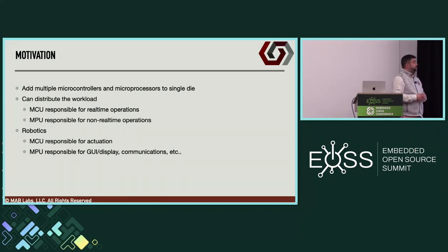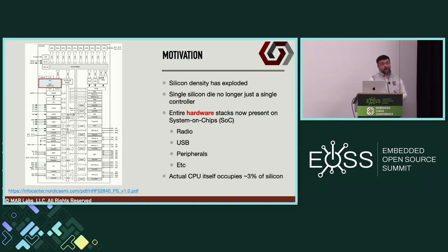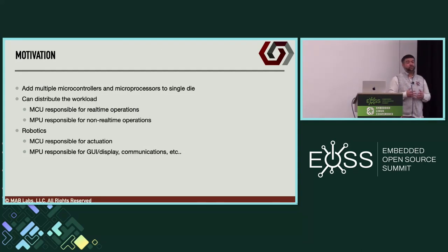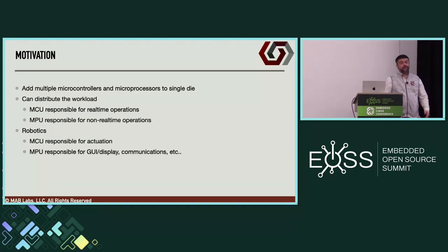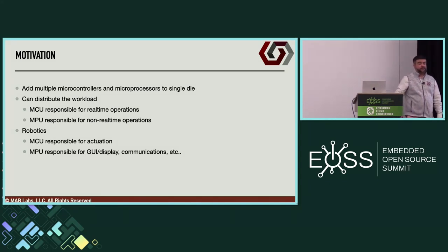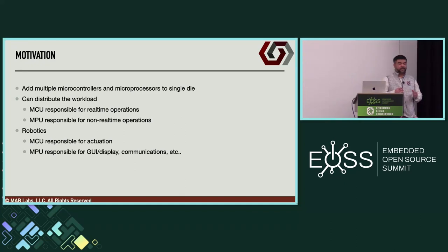As an extension to that, a lot more silicon vendors are now adding microcontrollers and microprocessors onto a single die. You have different peripherals on the die itself, but now you're adding multiple cores and multiple controllers on the SoC as well. The advantage is we can distribute the workload of our application across different microcontrollers and MPUs — the MCU can handle real-time operations like safety-critical components in automotive, while the MPU handles non-real-time components. In robotics, the MCU handles actuation and the MPU handles the GUI, display, and communication.